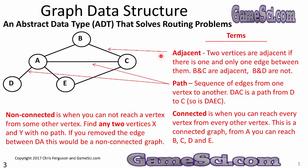Adjacent means two vertices have one and only one edge between them. B and C are adjacent; B and D are not. A path is the sequence of edges from one vertex to another — D, A, C is a path from D to C, but so is D, A, E, C. Connected means you can reach every vertex from every other vertex. Non-connected means you cannot reach some vertex from another. If you remove the edge between D and A, D would be disconnected, making it a non-connected graph.